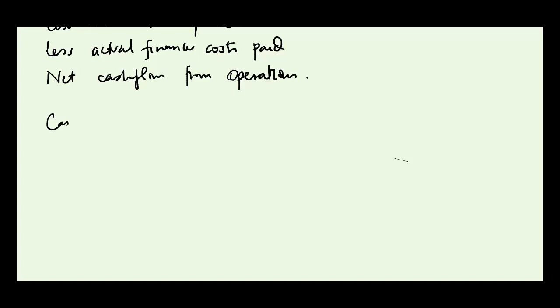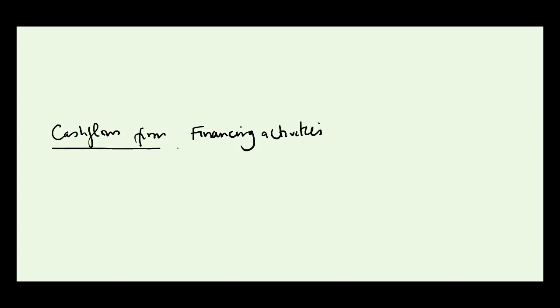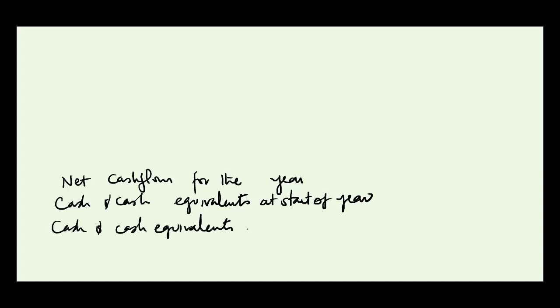Our next subheading is cash flows from investing activities, leaving five or so line items. Then we have cash flows from financing activities, again leaving five or so line items. Then we get net cash flows for the year, followed by cash and cash equivalents at the start of the year and cash and cash equivalents at the end of the year.